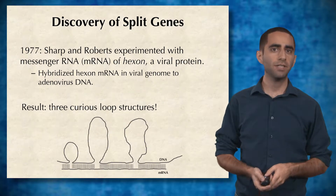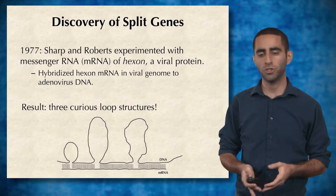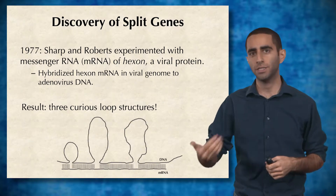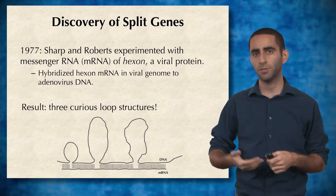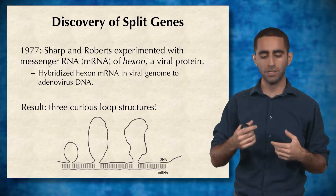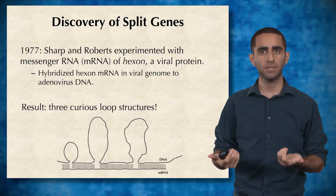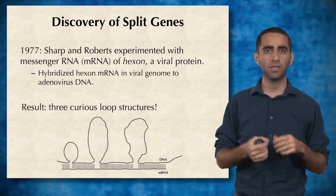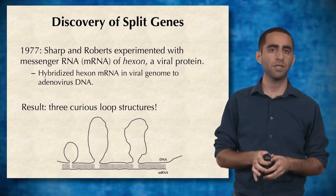But in 1977, Sharp and Roberts experimented with messenger RNA — the type of RNA that is translated to protein — of hexon, a specific viral protein. Basically, they took the DNA of this virus, of that specific gene, and they took the mRNA of the same gene, and they hybridized them.